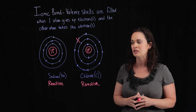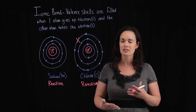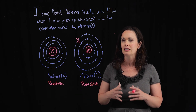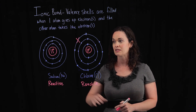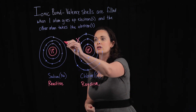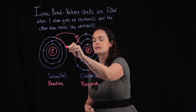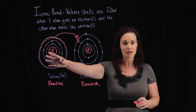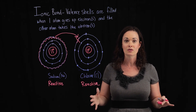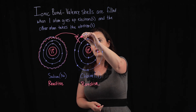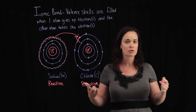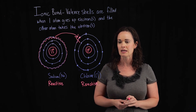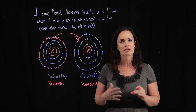The way this actually happens is different than you might think. You might assume sodium, with one electron in its outermost shell, needs to get seven more electrons — but that's not what happens. What actually happens is if sodium gives away that one electron to someone else, the entire third shell disappears. That makes the second shell the new valence shell, and that second shell is already full, making sodium stable. Sodium will give its electron to chlorine, forming sodium chloride — table salt — because chlorine is missing just one electron in its outermost shell.